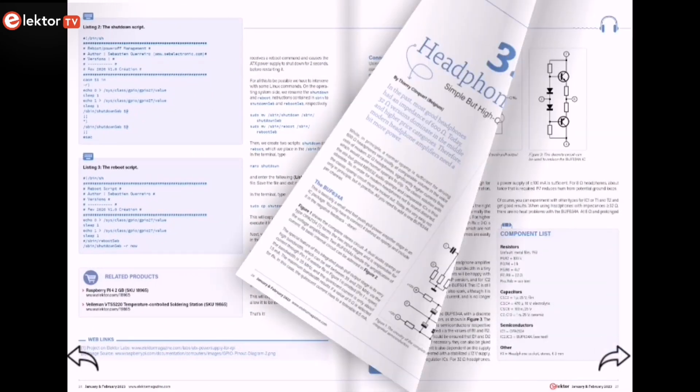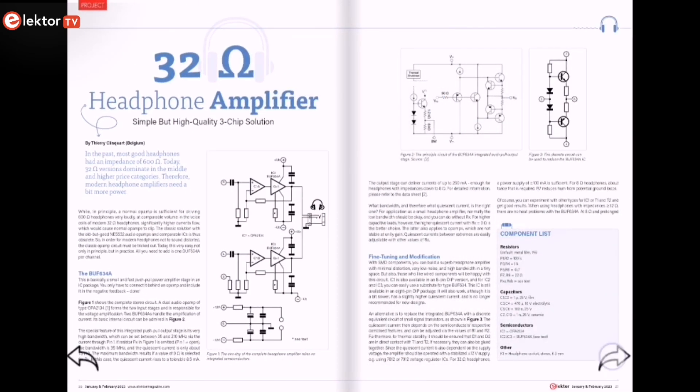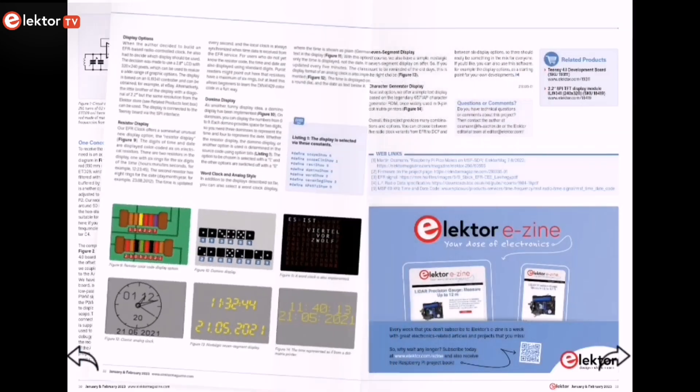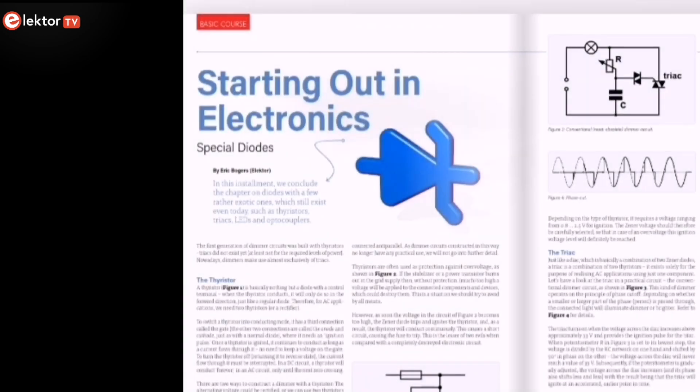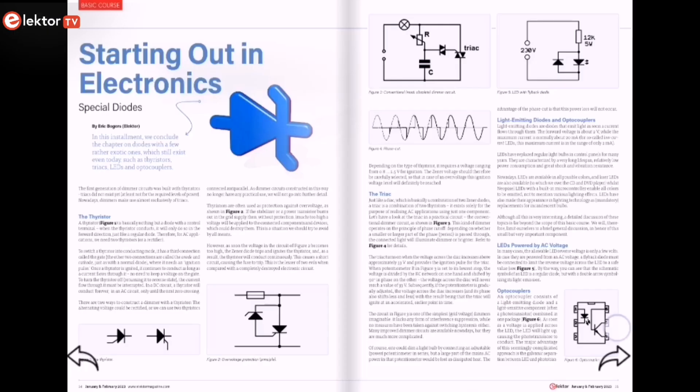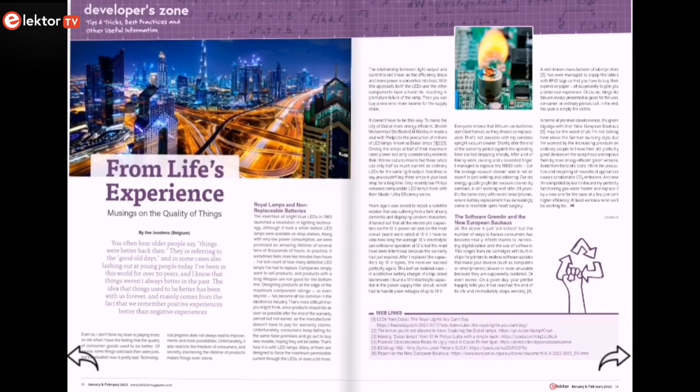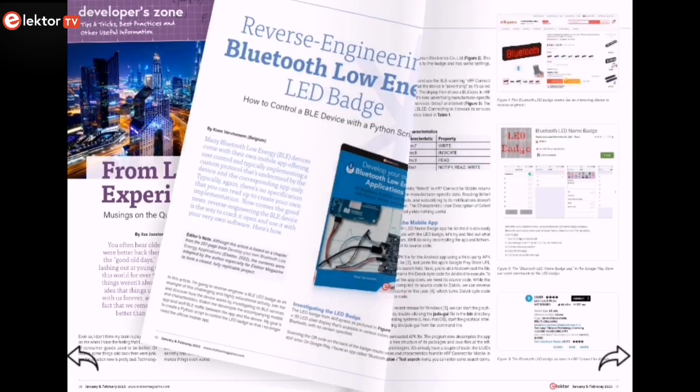Another article is about a 32-ohm headphone amplifier, a simple but high-quality 3-chip solution. Another episode of the series starting out in electronics, and this time it's about special diodes. An interesting article from life experience.